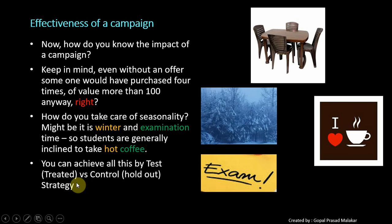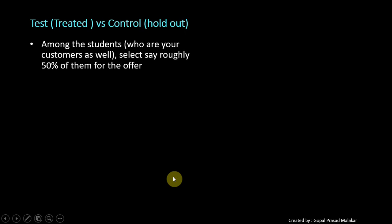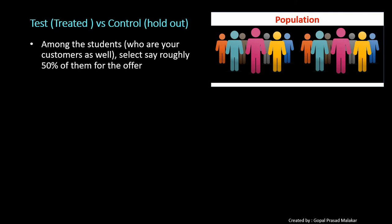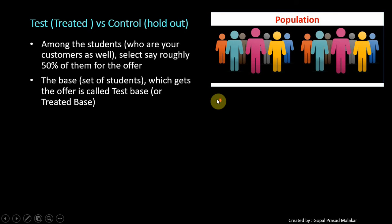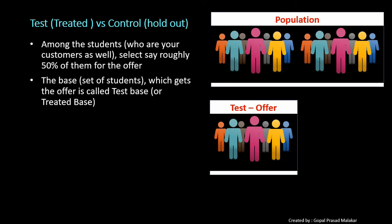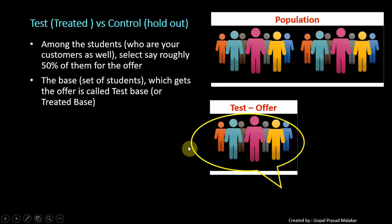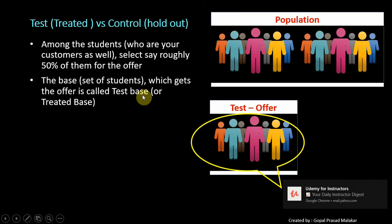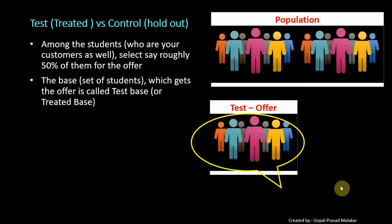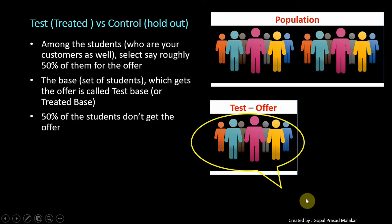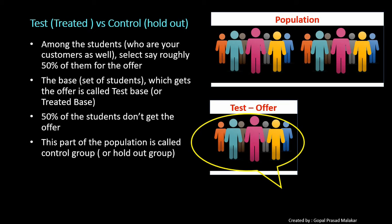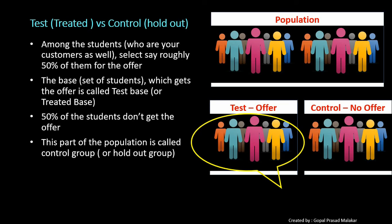All these things you can address with the Test vs Control strategy. Test is also called the treated group, and control is also called the holdout group. Among the set of people, you take roughly 50% of them and give them the offer — this base is called the test group or treated group. The second set of students who do not get the offer is called the control group or holdout group.